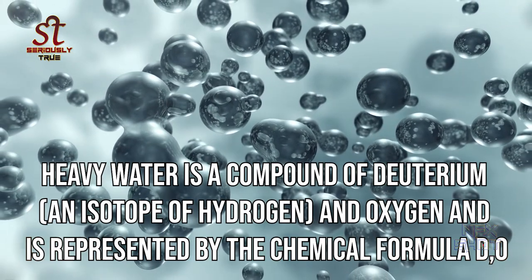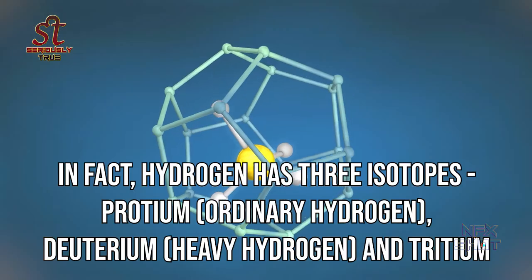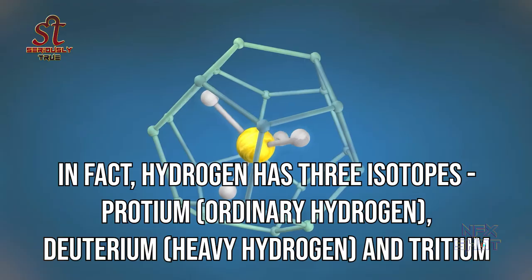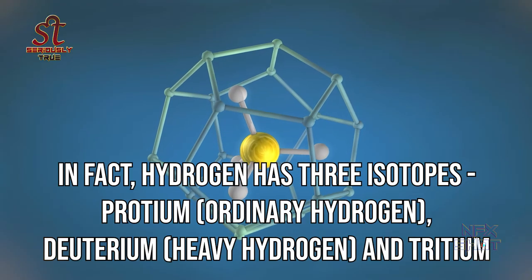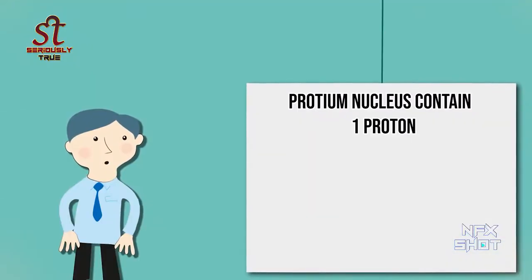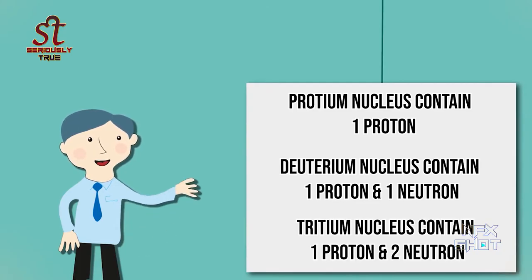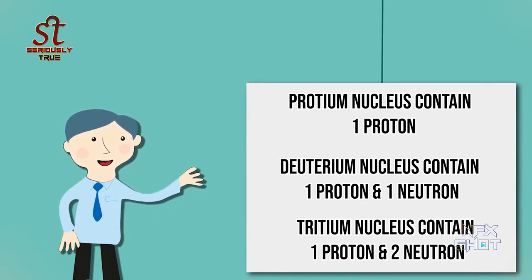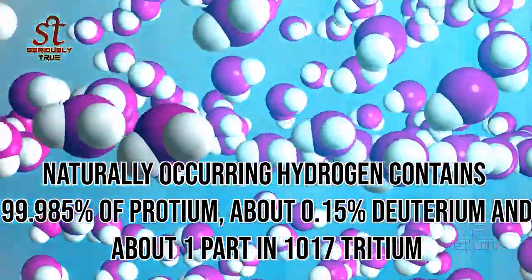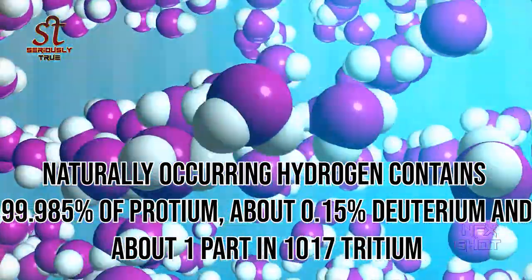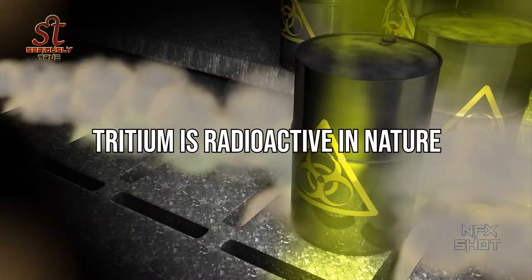Hydrogen has three isotopes: protium, which is ordinary hydrogen; deuterium, which is heavy hydrogen; and tritium. The protium nucleus contains only one proton, while the deuterium nucleus contains one proton and one neutron, and the tritium nucleus contains one proton and two neutrons. Naturally occurring hydrogen contains 99.985% protium and about 0.015% deuterium.